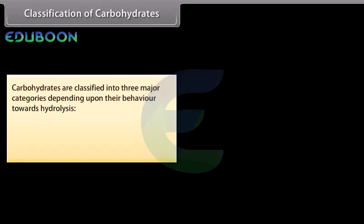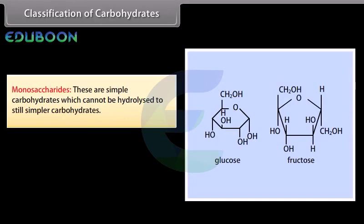Carbohydrates are classified into three major categories depending upon their behavior towards hydrolysis: monosaccharides, oligosaccharides, and polysaccharides. Monosaccharides are simple carbohydrates which cannot be hydrolyzed to still simpler carbohydrates. For example, glucose and fructose.